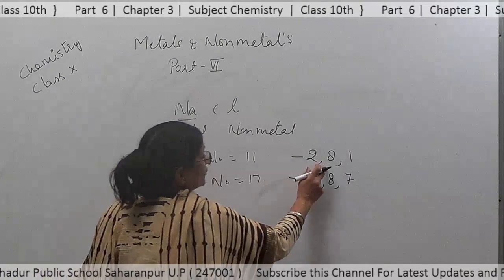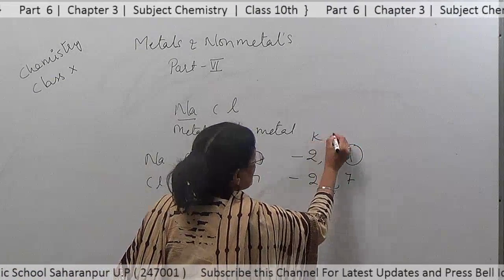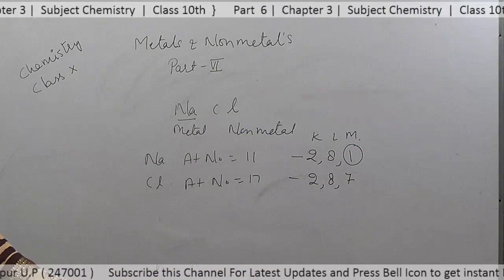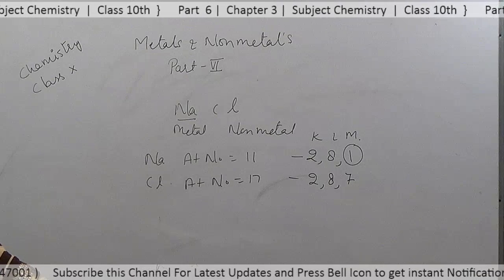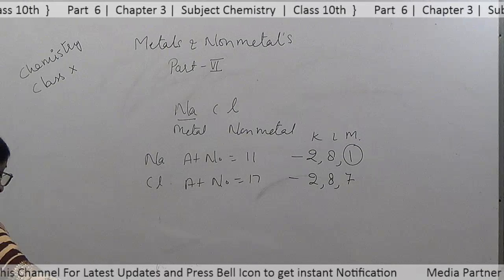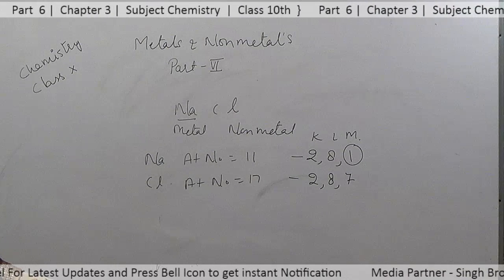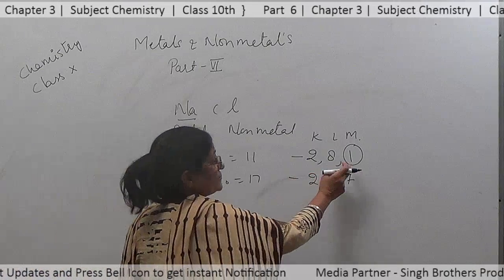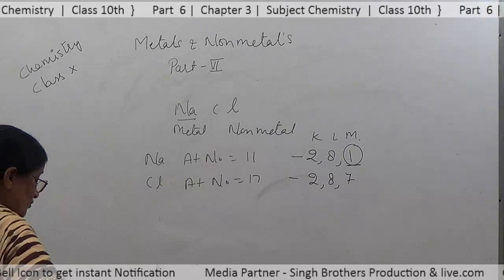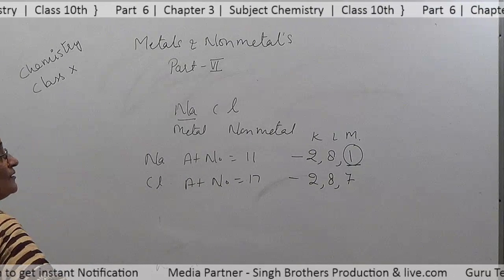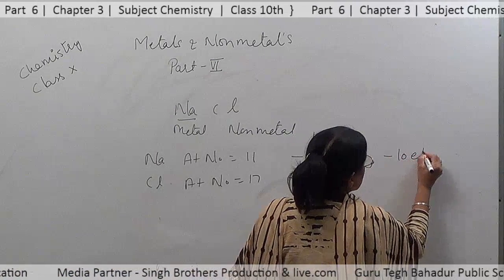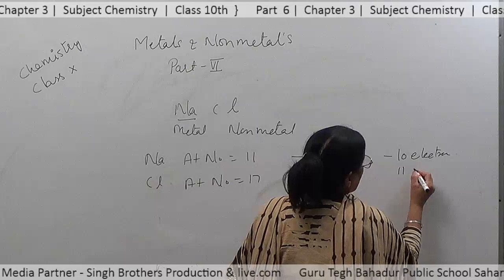In the case of sodium, the outermost orbit (the M shell) has one electron, and it can easily donate or lose this electron to become stable. Once it loses that one electron, it has two completely filled shells with 10 electrons in the K and L shells, but its nucleus still has 11 protons.